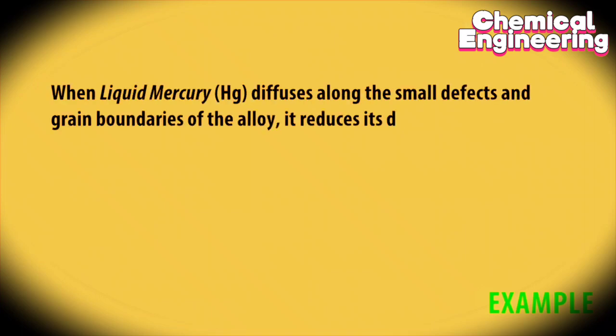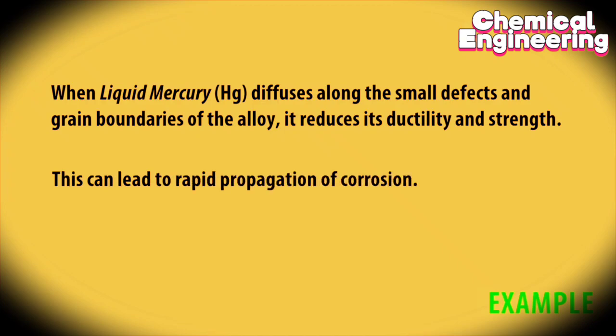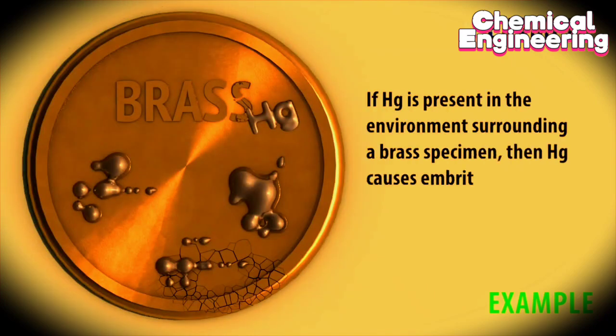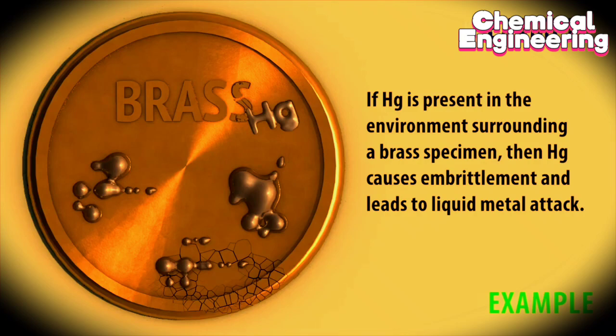Another example: when liquid mercury diffuses along the small defects and grain boundaries of the alloy, it reduces its ductility and strength. This can lead to rapid propagation of corrosion. If mercury is present in the environment surrounding a brass specimen, then mercury causes embrittlement and leads to liquid metal attack.